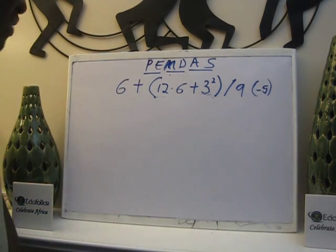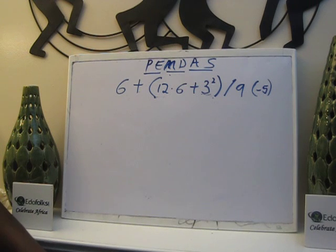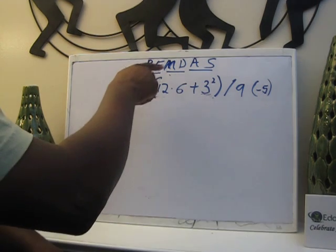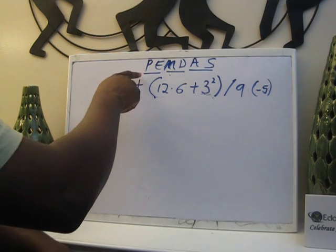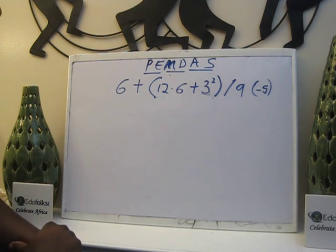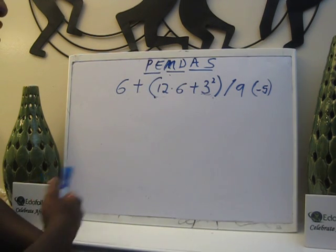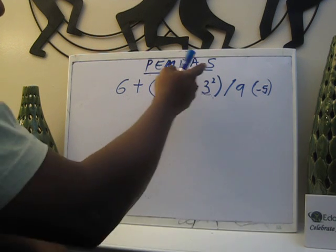When you have a problem like this, you're asked to simplify it. Please excuse my dear Aunt Sally. P is parenthesis, E stands for exponents, M is for multiplication, D for division, A for addition, and S for subtraction.